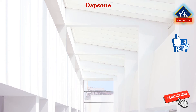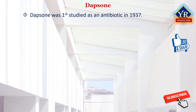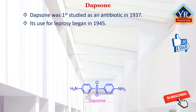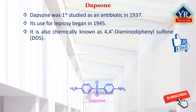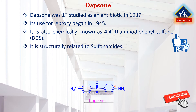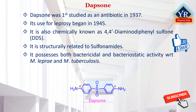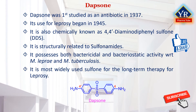Coming to the individual sulfone drug Dapsone. Dapsone was first studied as an antibiotic in 1937 and its use for leprosy began in 1945. Dapsone is chemically known as 4,4-diaminodiphenyl sulfone, abbreviated DDS. It is structurally related to sulfonamides and possesses both bactericidal as well as bacteriostatic activity with respect to Mycobacterium leprae and Mycobacterium tuberculosis. It is the most widely used sulfone for the long-term therapy of leprosy.